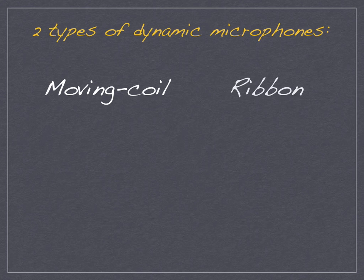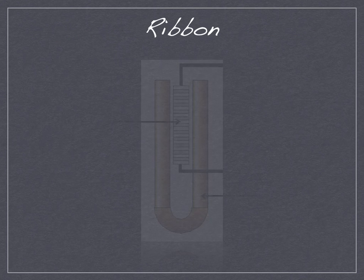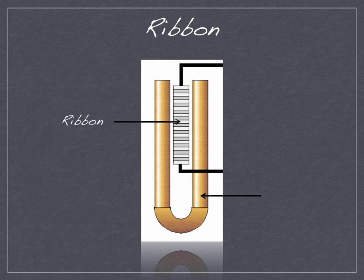Now Ribbon Microphones. Ribbon Microphones, like the Moving Coil Microphones, employ Magnetic Induction. But instead of a Moving Coil, it uses a metal ribbon attached to a fixed magnet.